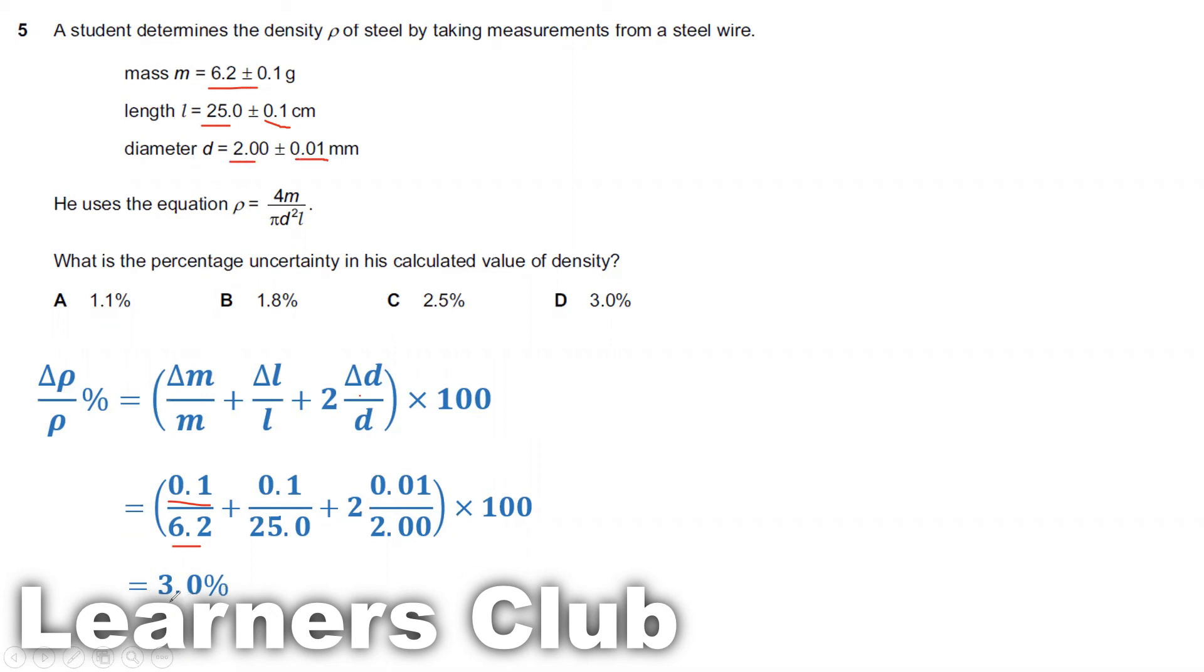Multiply by 100, we get 3.0%, which is D. So the answer is option D.